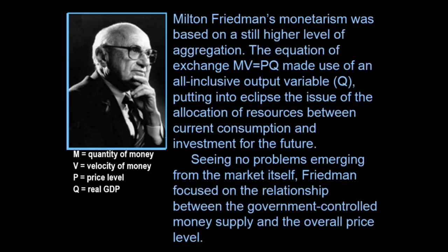If you look at Friedman, he's got a higher level of aggregation. His monetarism was based on the equation of exchange: MV equals PQ — more about that later. Q is total output — everything — that's consumption and investment. His level of aggregation doesn't even allow a distinction between consumption and investment, which puts in eclipse the issues of the allocation of resources between current consumption and future investment, and certainly any ongoings within the investment sector.